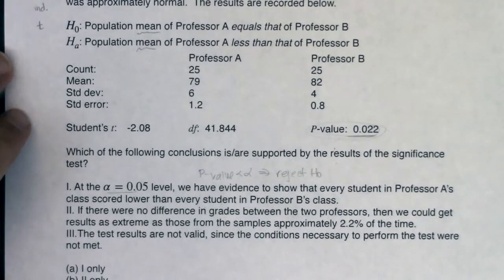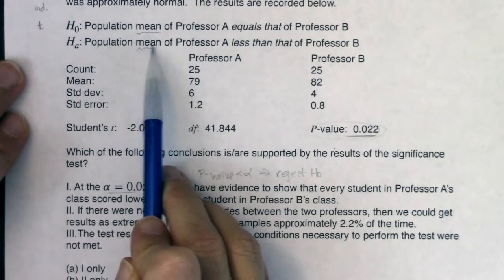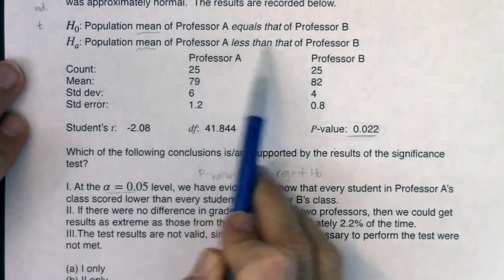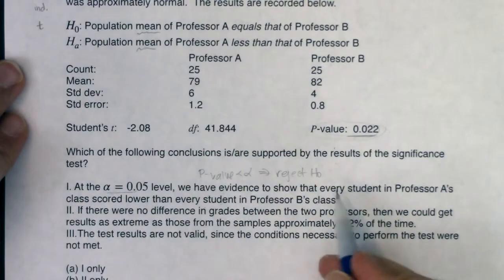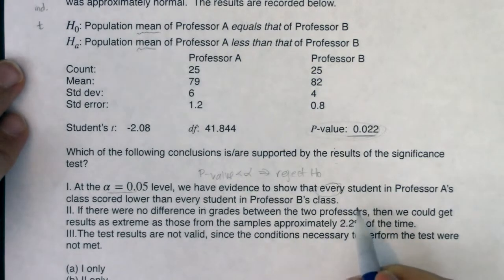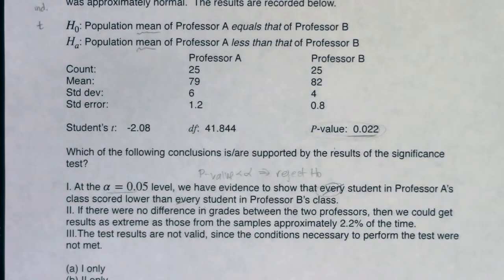If we rejected H naught we would say, and I'm going to try and keep both of these in view so let me scooch this down just a bit, we would say that we have evidence that the average, the mean of Professor A is less than the mean of Professor B. Right we would not say we have evidence to show that every student in Professor A's class scored lower than every student in Professor B's.